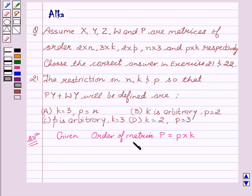It is given that order of matrix P equal to P cross K, order of matrix Y equal to 3 cross K, order of matrix W equal to N cross 3.